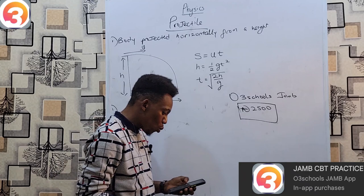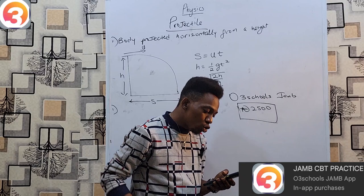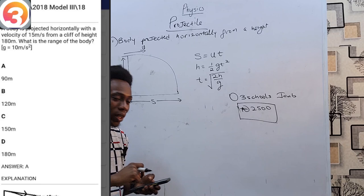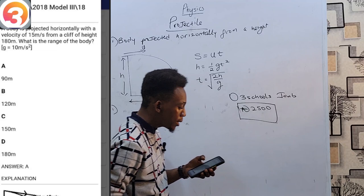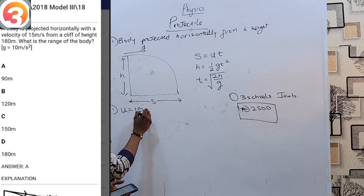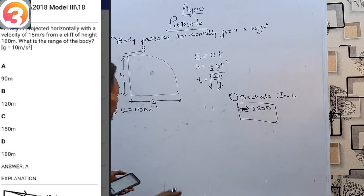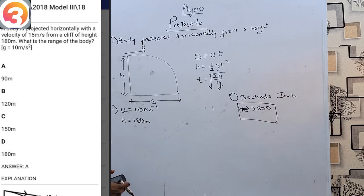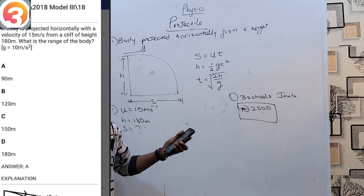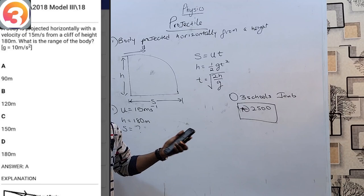Let's look at some examples. Example one is from the JAMB app: 2018 Model 3, question number 18. A body is projected horizontally with a velocity of 15 m/s from a cliff of height 180 meters. What is the range of the body? Remember, range refers to the horizontal distance traveled before it falls — we want to find s.